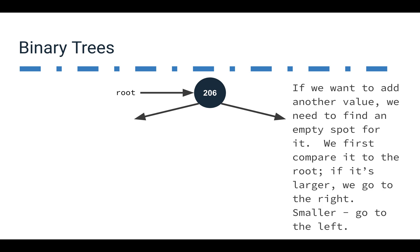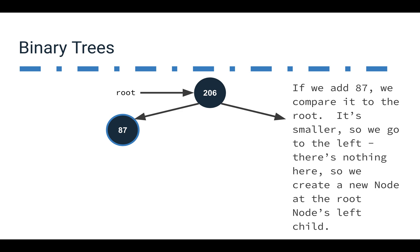If we add another value, we need to find an empty spot for it in our tree. There are rules to this structure: we look at each tree node we're evaluating and compare what we're adding to that node. If it's smaller, we go to the left side; if it's larger, we go to the right side. We continue that process until we find an empty spot. So if we're adding 87, we compare it to the root value 206 — it's smaller, so we go left. Since there's nothing there, we create that new node, and 87 becomes the left child of 206.